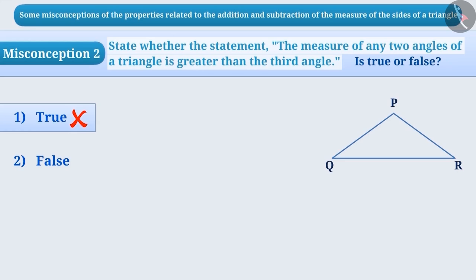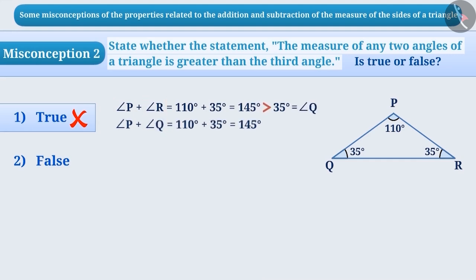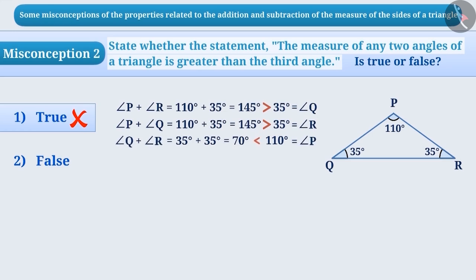Let us see an example to clear this misconception. In this triangle, angle P plus angle R equals 110 degrees plus 35 degrees, which equals 145 degrees — greater than 35 degrees. So the sum of angle P and angle R is greater than angle Q. Similarly, angle P plus angle Q equals 145 degrees, which is greater than angle R. But if we take the sum of angle Q and angle R, it equals 35 plus 35 equals 70 degrees, which is less than 110 degrees. So the sum of angle Q and angle R is less than angle P.